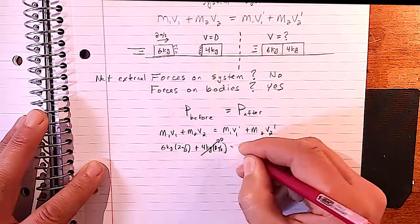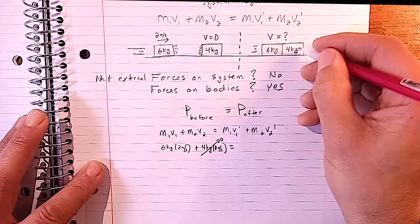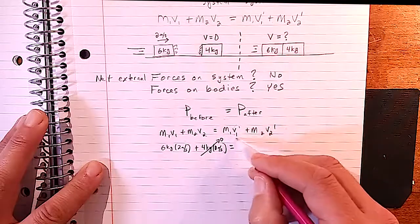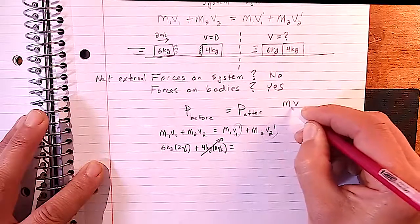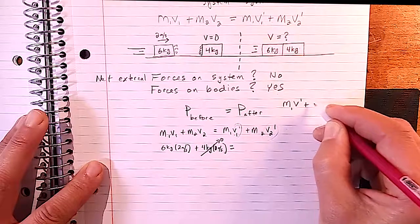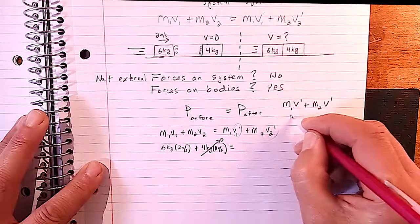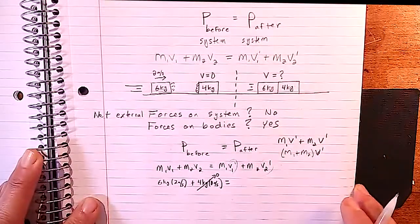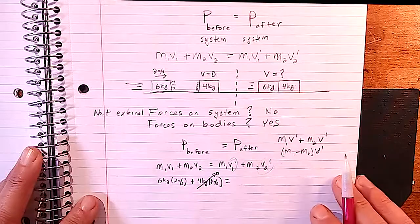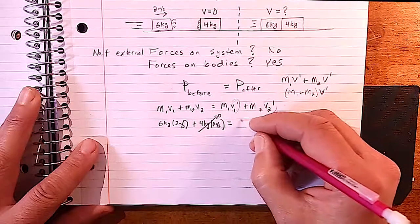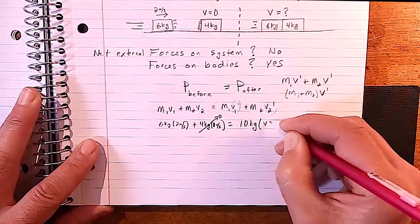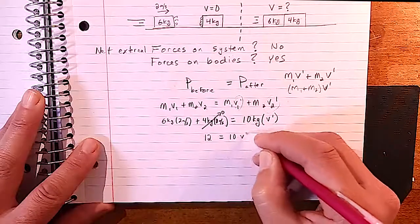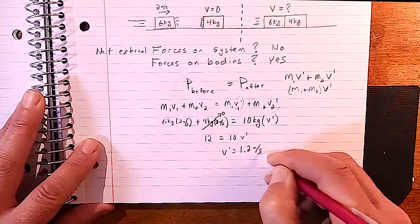The first block is 6 kilograms at 2 meters per second; the second block is 4 kilograms at zero. After the collision they stick together and share the same velocity v′. So: 6 × 2 + 4 × 0 = (6 + 4) × v′, giving 12 = 10 × v′, so v′ = 1.2 meters per second. More mass means slower velocity — that makes sense.